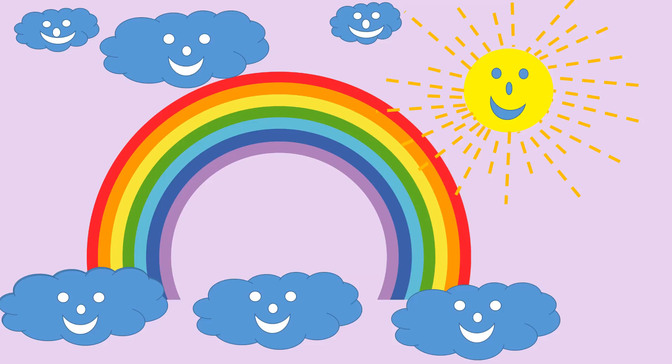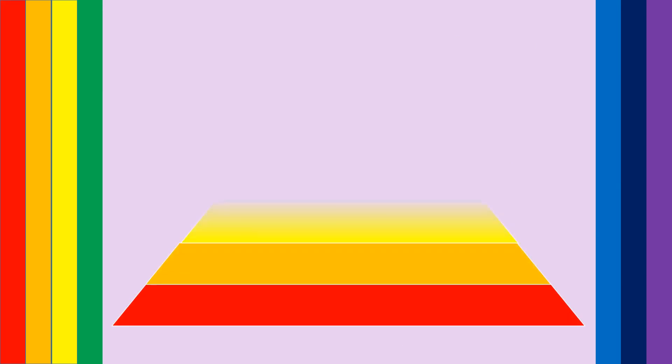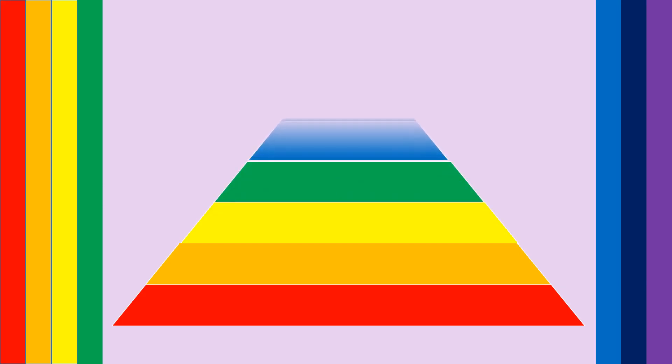Hi everyone, today we will study the colors of the rainbow. Rainbow consists of seven colors: red, orange, yellow, green, blue, indigo, and purple. Repeat after me and enjoy the video, and don't forget to subscribe to our channel. Let's start: red, orange, yellow, green, blue, indigo, purple.